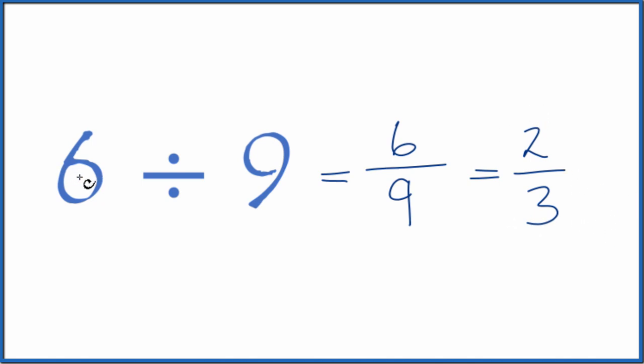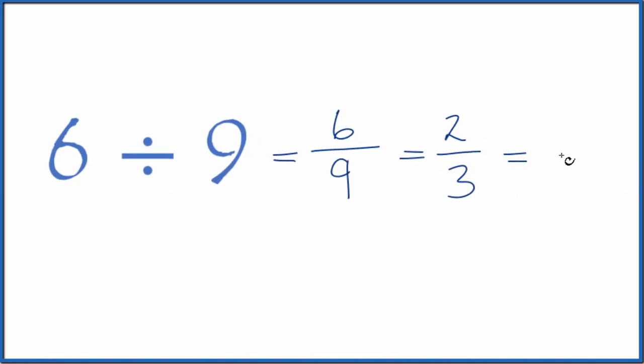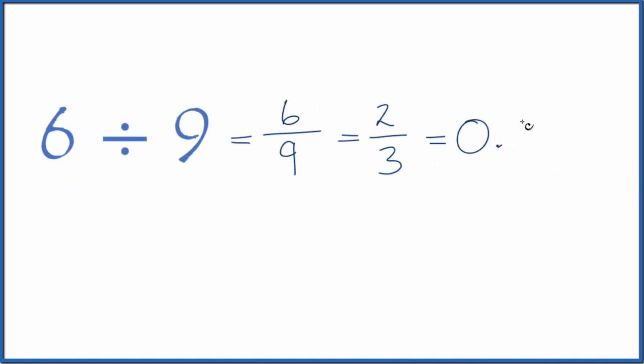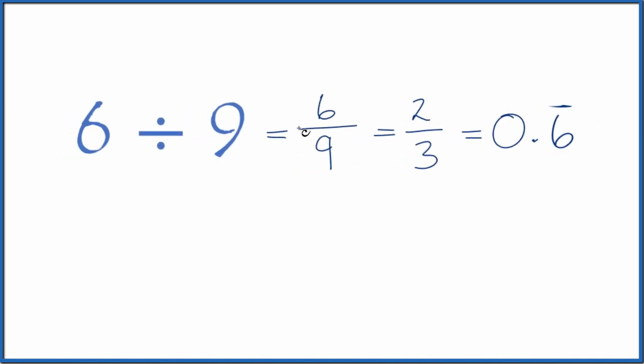You could also, on a calculator, divide 6 by 9. You end up with 0.666, and the 6's keep going. So, let's put a bar over this, and then we'll get rid of these. So, 6 divided by 9, that gives you 0.66666. 6 just keeps repeating.